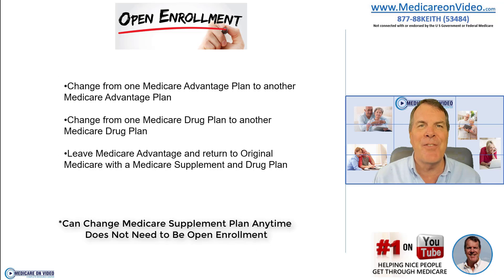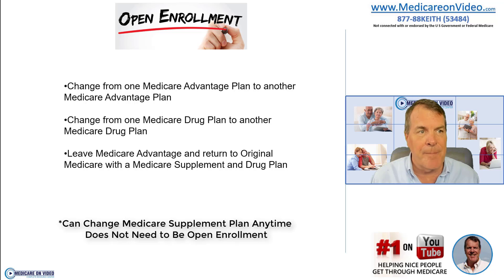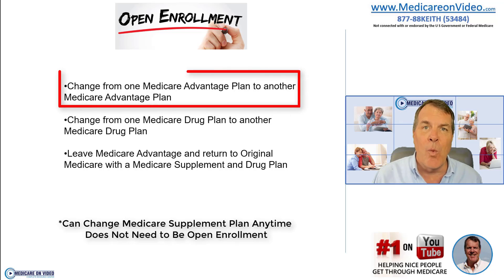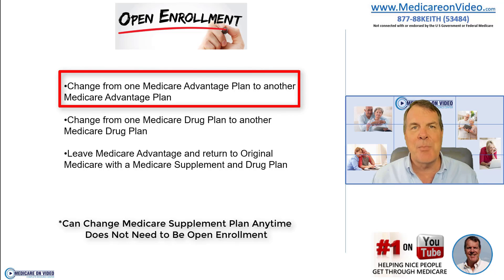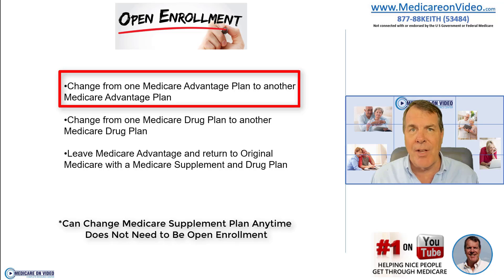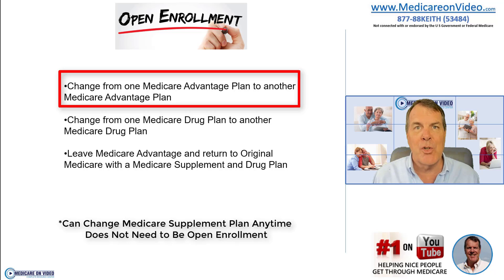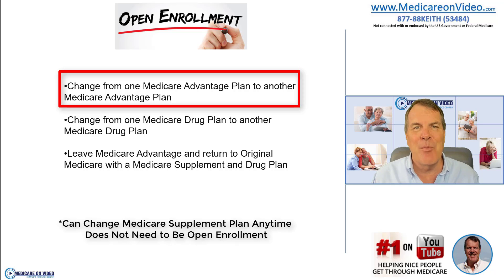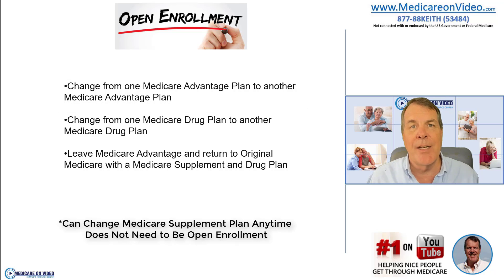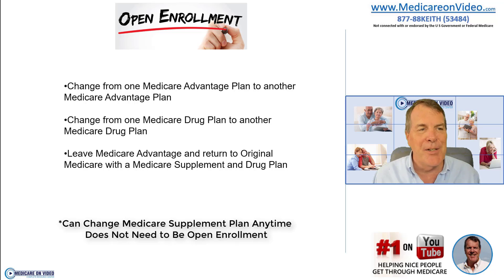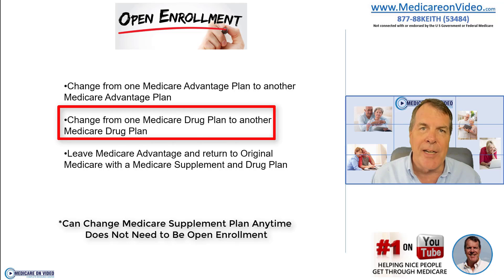Let's simplify what actually happens for most people. If you're on a Medicare Advantage plan, you can switch to a different Advantage plan. Why? Because Advantage plans can change during the year — doctors come in and out of the network. If your doctors leave your plan, you may want to find a different one. If you're in an Advantage plan and have no issues with it, simply stay where you are. There's nothing you need to do.